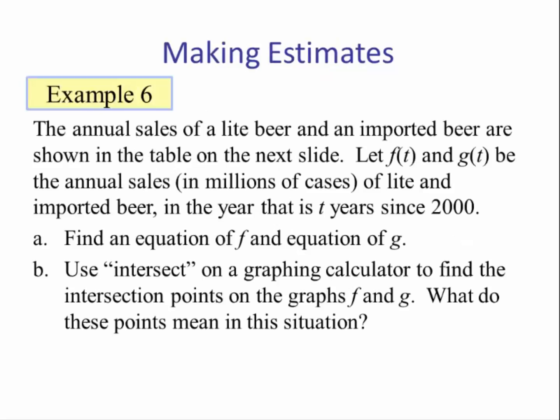Example 6: The annual sales of light beer and an imported beer are shown in the table on the next slide. Let f(t) and g(t) be the annual sales in millions of cases of light and imported beer, in the year that is t years since 2000. Part A: Find an equation of f and an equation of g. Part B: Use intersect on a graphing calculator to find the intersection points on the graphs of f and g. What do these points mean in this situation?